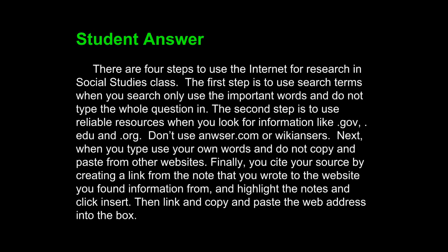Let's take a look at a student example. This is an actual student answer from a 7th grade social studies class. 'There are four steps to use the Internet for research in social studies class.' That's a fairly clear topic sentence. The first step is to use search terms when you search — only use the important words and do not type the whole question in. Despite the fact that this is a run-on sentence, it seems fairly clear, and the clarity continues.